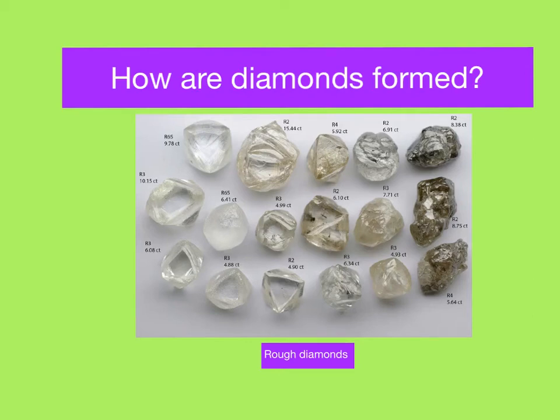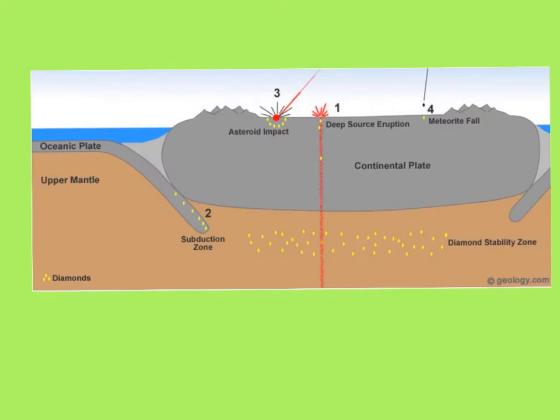How are diamonds formed? I found an excellent article called 'How Do Diamonds Form' by Dr. Hobart M. King. He talks about the fact that diamonds found at or near Earth's surface have formed through four different processes. This cartoon drawing presents these four methods of diamond formation, and then we're going to go through them in a bit more detail in just a moment.